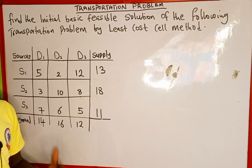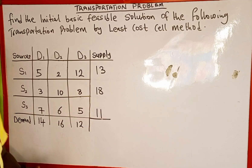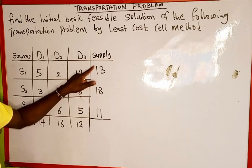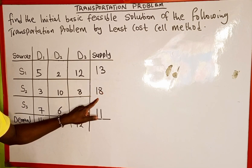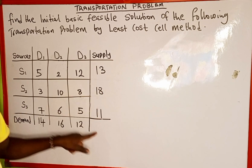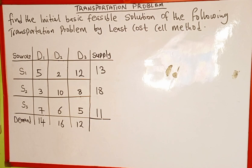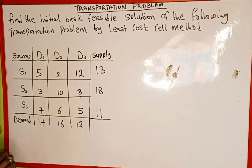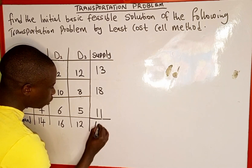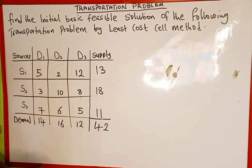If it were unbalanced, we would create a dummy column or row. Let's check: summing all the supply, 13 plus 18 plus 11 gives us 42. Summing all the demand, 14 plus 16 plus 12 also gives us 42. Therefore, this problem is balanced.